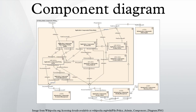When using a component diagram to show the internal structure of a component, the provided and required interfaces of the encompassing component can delegate to the corresponding interfaces of the contained components. A delegation connector is a connector that links the external contract of a component to the internal realization of that behavior by the component's parts. The example above illustrates what a typical insurance policy administration system might look like. Each of the components depicted in the diagram may have other component diagrams illustrating their internal structure.